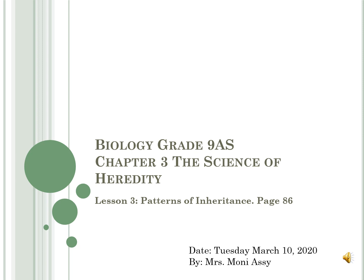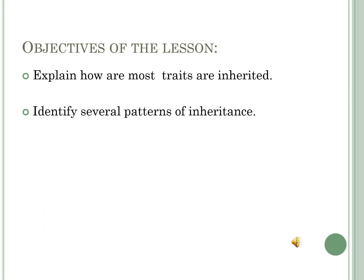Good morning, grade 9 students. This is Ms. Mounia Asse. Today is Tuesday, March 10, 2020. Our chapter today is about the Science of Heredity, Lesson 3, Patterns of Inheritance. Please open your books to page 86. The objective of the lesson is to explain how most traits are inherited and to identify the several patterns of inheritance found in life.